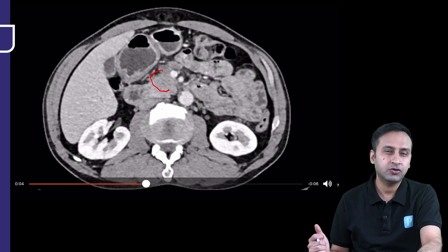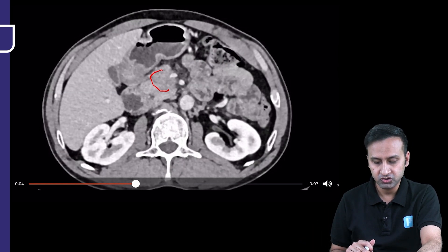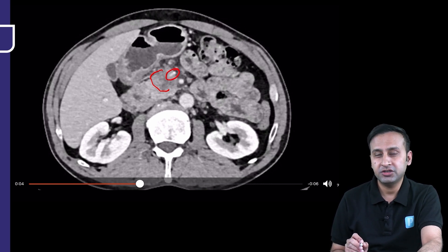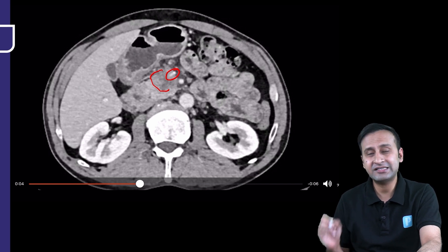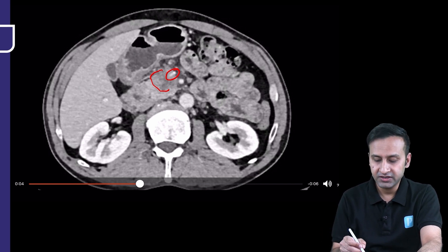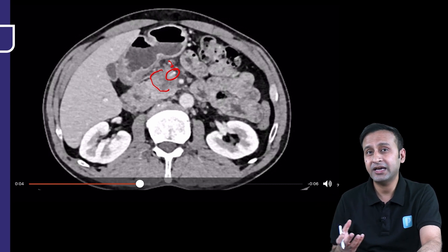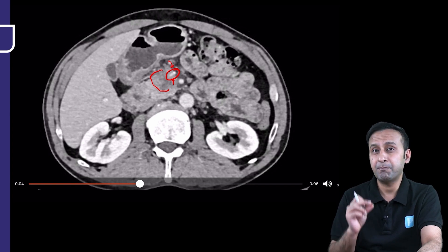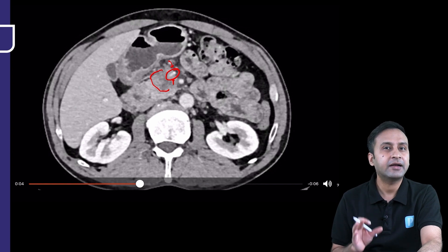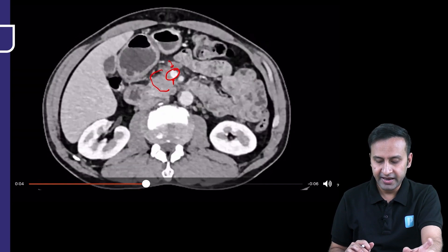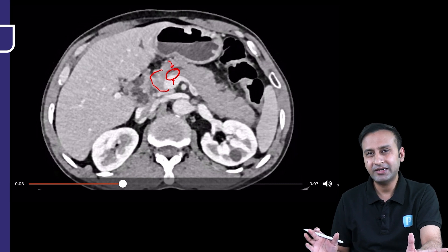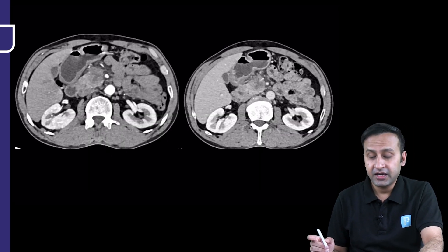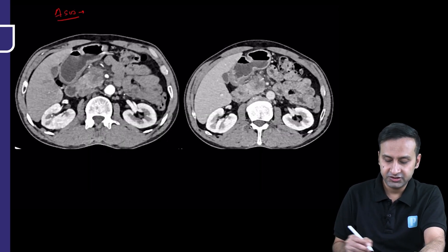First, pancreatic adenocarcinomas will be hypo-enhancing like this. Second, look at the vascular encasement — in mass-forming pancreatitis you won't have vascular invasion. Only typical pancreatic adenocarcinomas can cause compression, encasement, vascular narrowing, and irregularity of the vessel wall. Because we can see the SMV has been compressed by this lesion, we're talking about a case of pancreatic malignancy. The prima facie diagnosis is quite clear — we've answered the first part of the question.